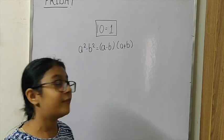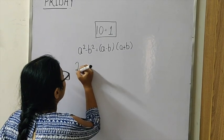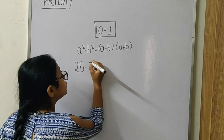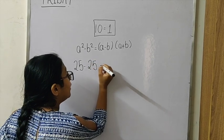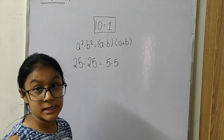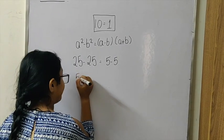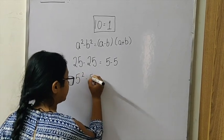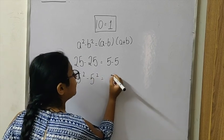Let's take a number, for example 25. 25 minus 25 is equal to 5 minus 5, since both of them result to zero. We can also write 25 as 5 squared minus 5 squared is equal to 5 minus 5.